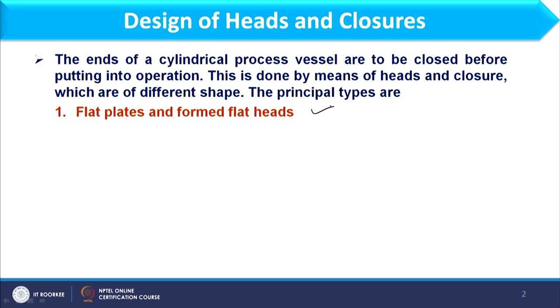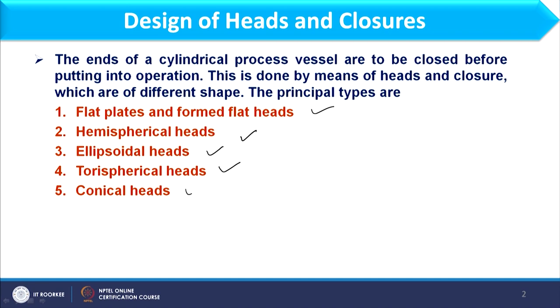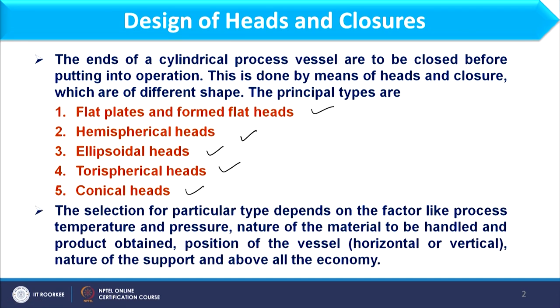We have different types of heads such as flat plate and formed flat heads, hemispherical heads, ellipsoidal heads, torispherical heads, and conical heads. Selection of a particular type of head depends on factors like process temperature and pressure, nature of the material to be handled or stored, position of the vessel whether horizontal or vertical, nature of support, and above all, economy. Economy is the primary criteria for selection.